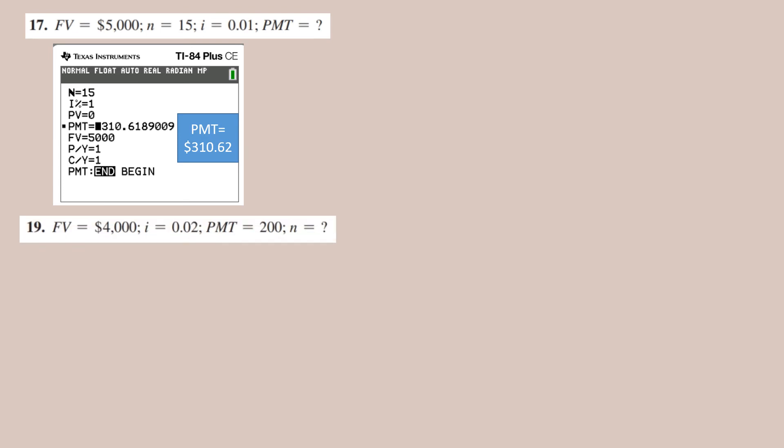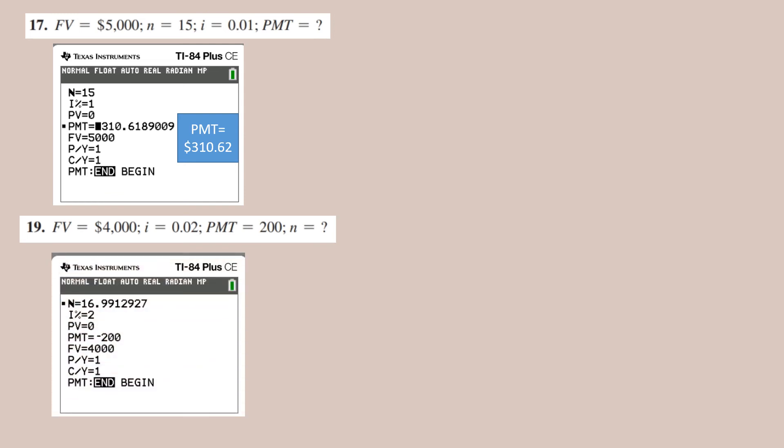Now in this case, if I am trying to find n, the number of payments, I know that my n will be 16.99. In this case, if I round this to the whole number, since n represents the payment period, n will be 17.